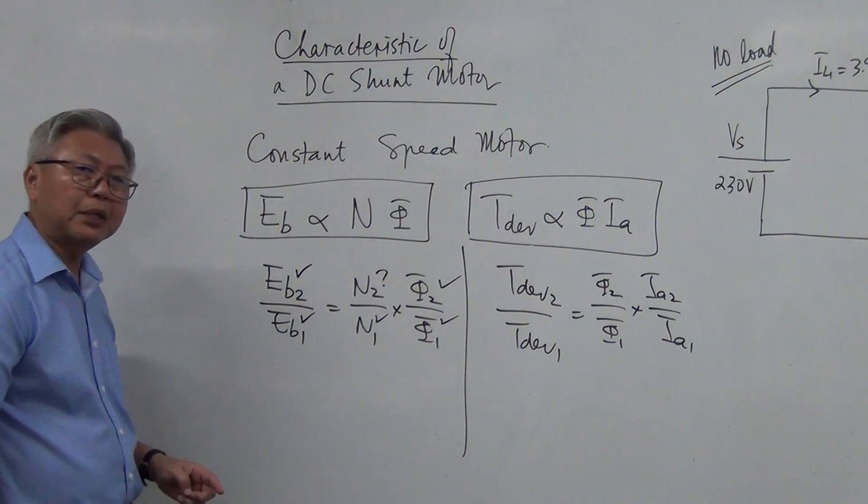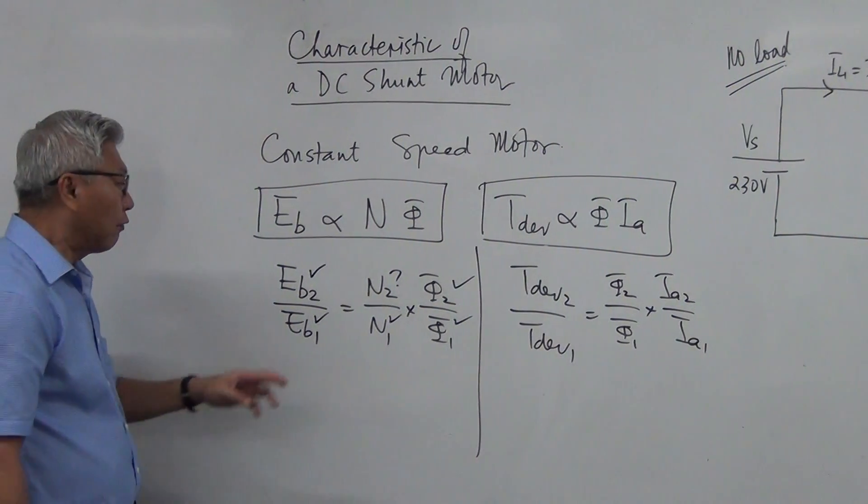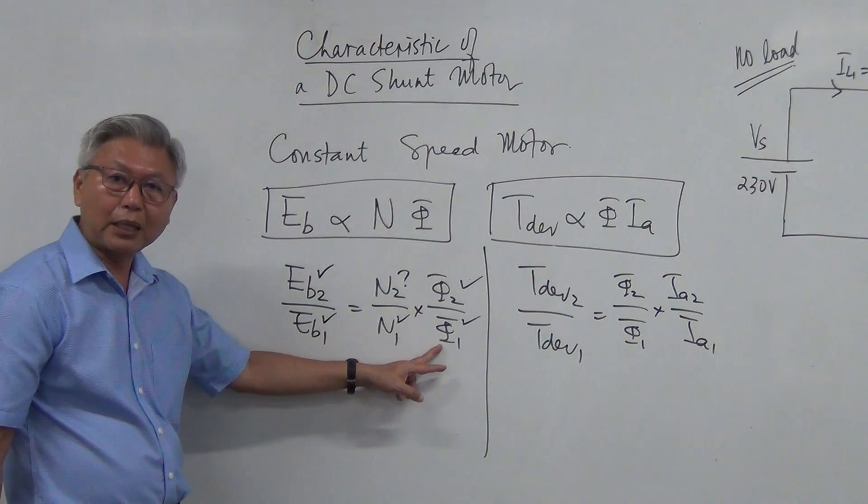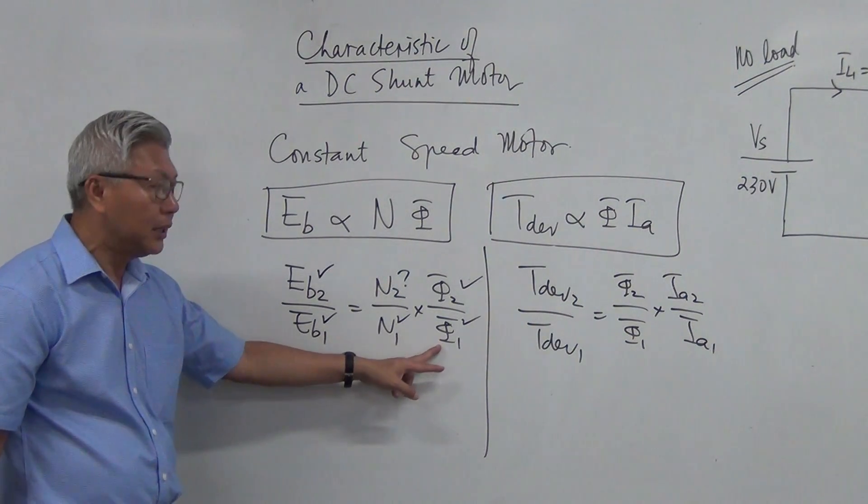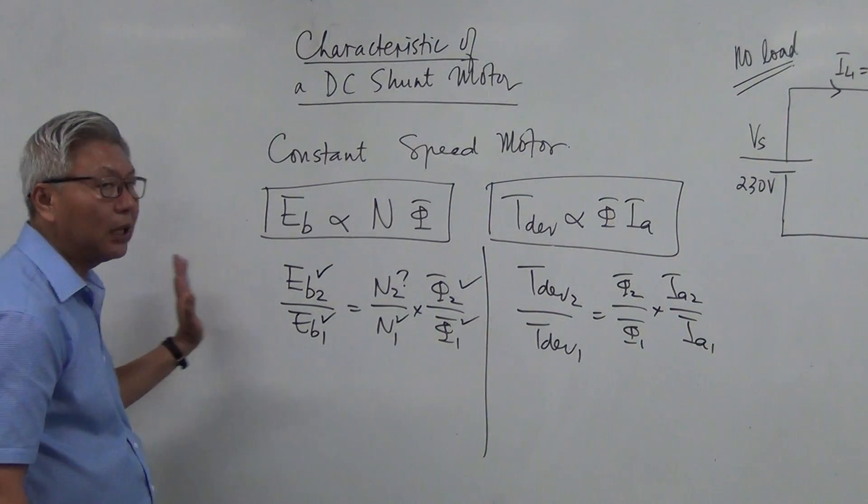Likewise, just like in our separately excited generator mathematical analysis, flux often can be replaced by field current as well. Because field current is the one that produces the flux. So there is so much about it, so let us now move on to an example.